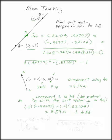Essentially what we've done is we've broken this vector from C to B into a bit that lies along AB and a bit that's perpendicular to AB.